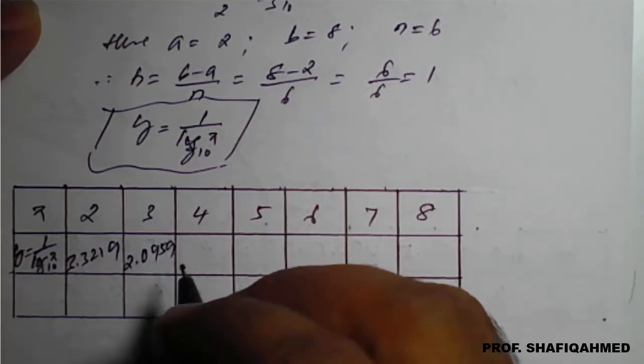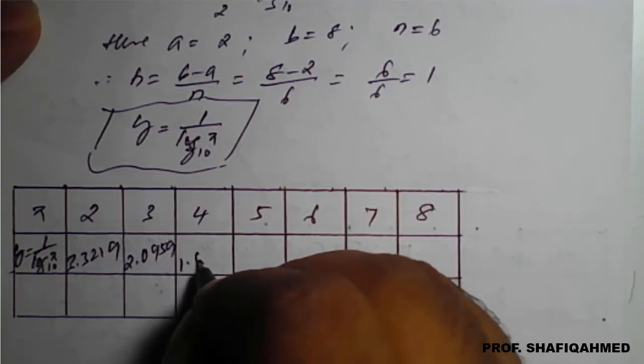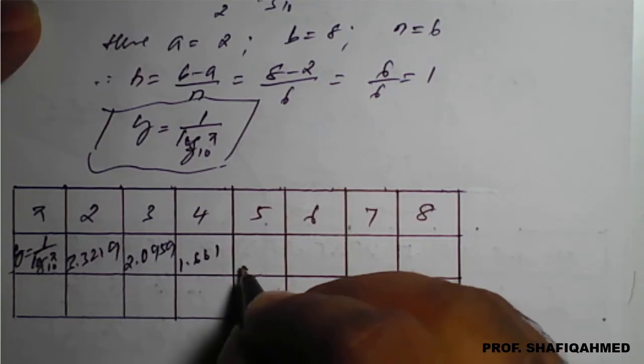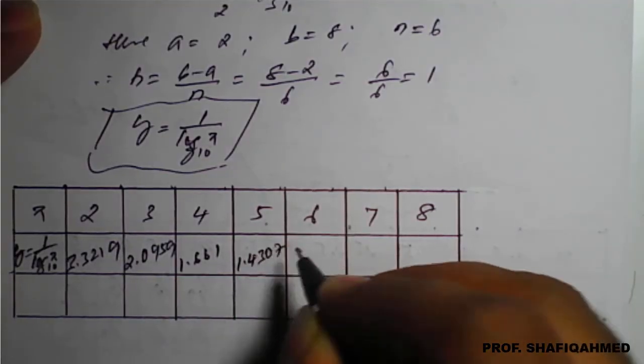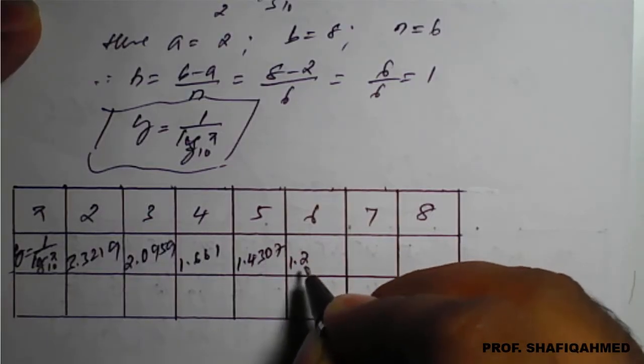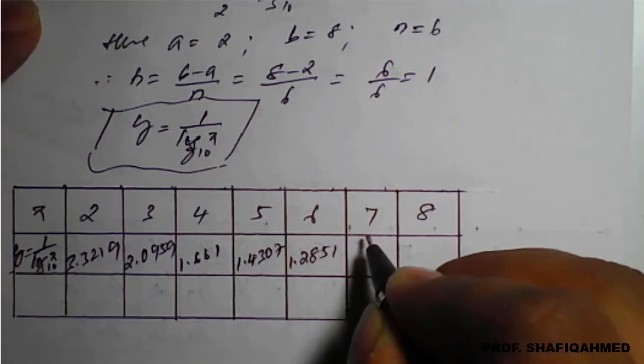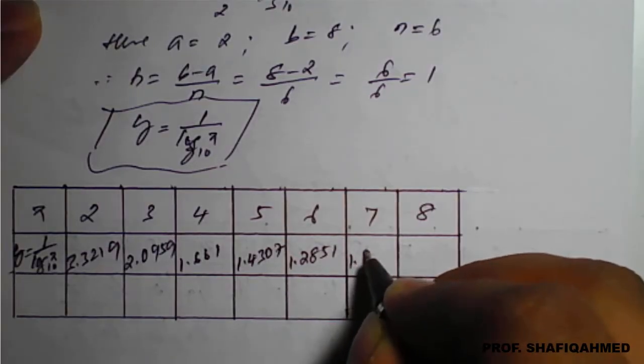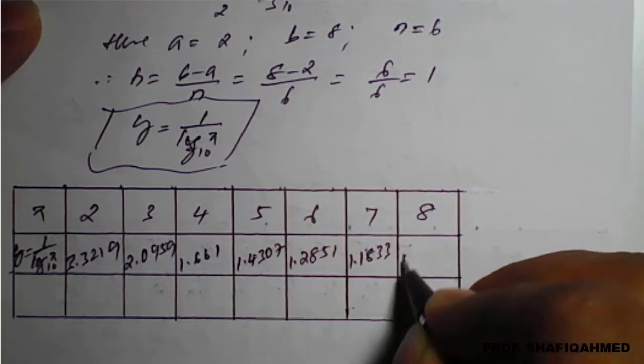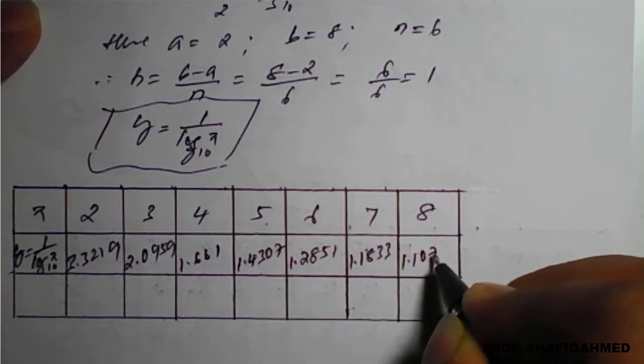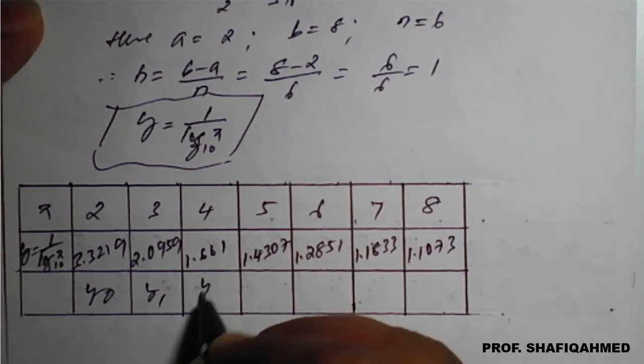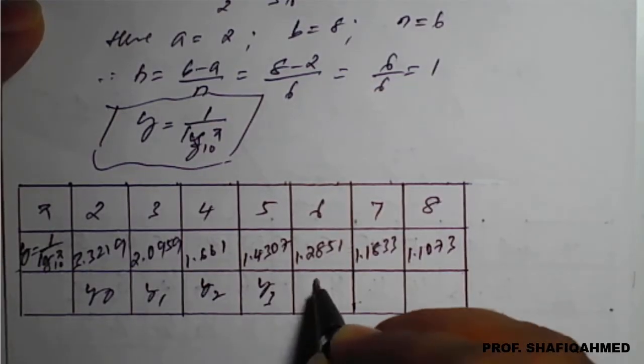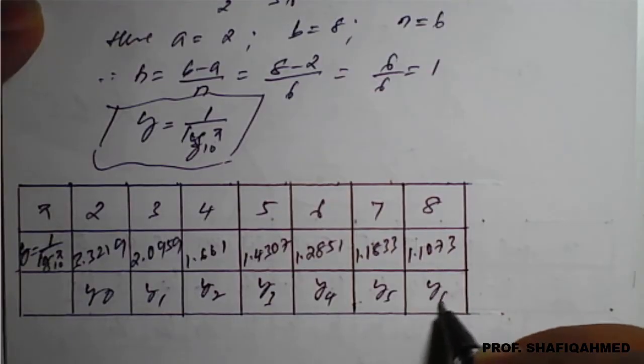The next value for x equals 4 is 1.661, then for 5 it is 1.4307, for 6 it is 1.2851, for 7 it is 1.1833, and for 8 it is 1.1073. Therefore, this is y0 value, y1, y2, y3, y4, y5, and y6.